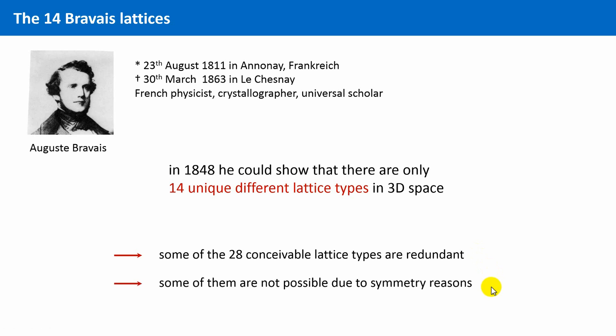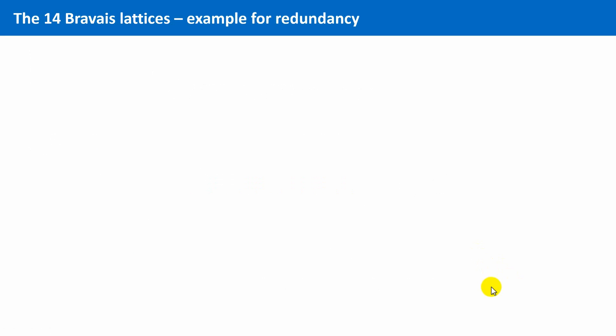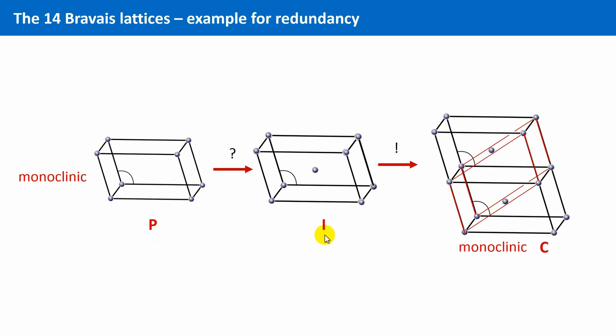Let's have a look at an illustration for each of the two reasons. We have this primitive monoclinic cell, and it is indeed allowed to build such an I-centered monoclinic unit cell. But this can also be described by a C-centered cell, as shown here in red.